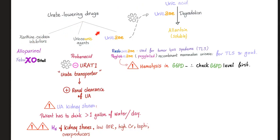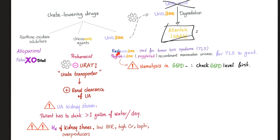Urate-lowering drugs include xanthine oxidase inhibitors, uricosuric agents, and uricase. Uricase is an enzyme that degrades uric acid. Some birds and other organisms have it, but humans do not. We can therefore give humans uricase such as rasburicase and pegloticase, which degrade uric acid into soluble allantoin. Rasburicase is used for tumor lysis syndrome; pegloticase is used for gout and tumor lysis syndrome — it is a pegylated recombinant mammalian uricase. Side effect: hemolysis in patients with G6PD deficiency.